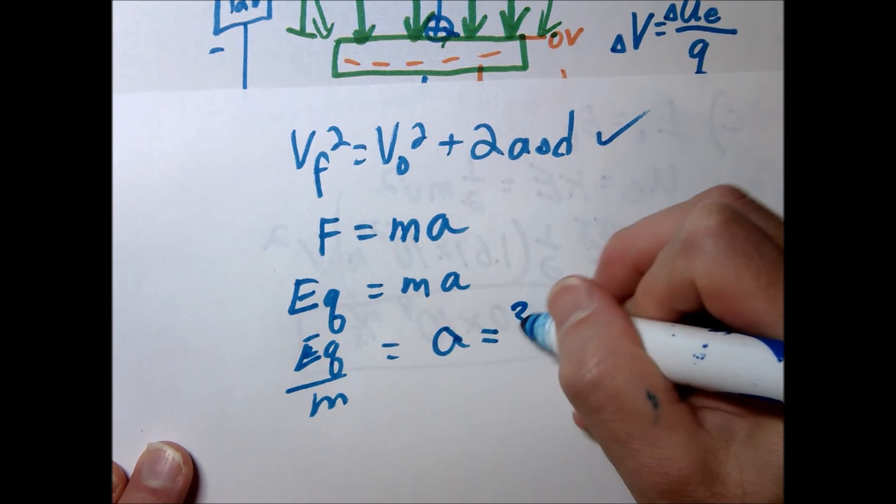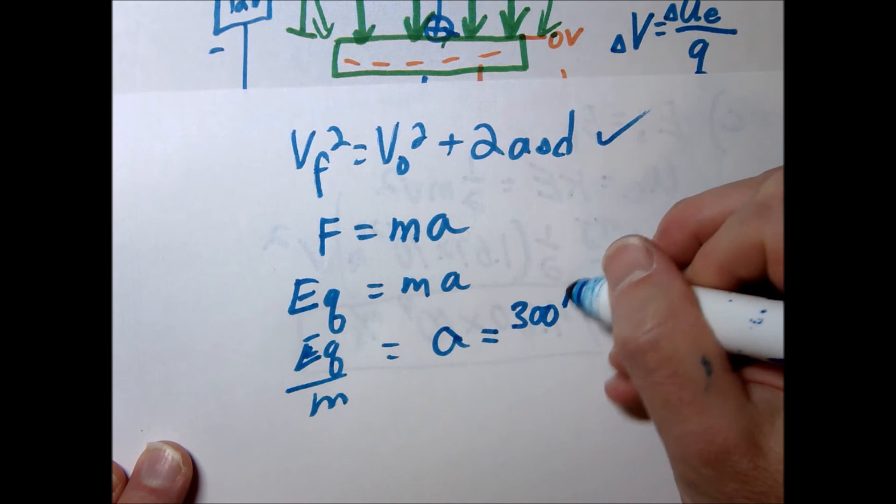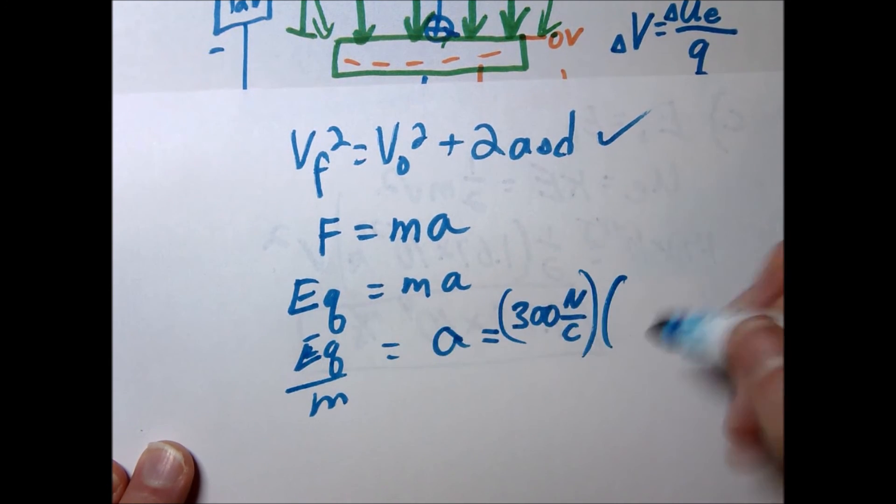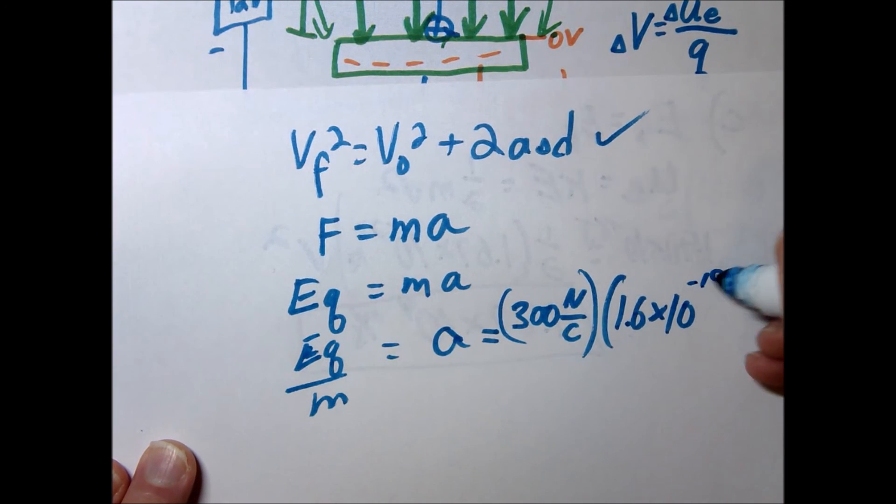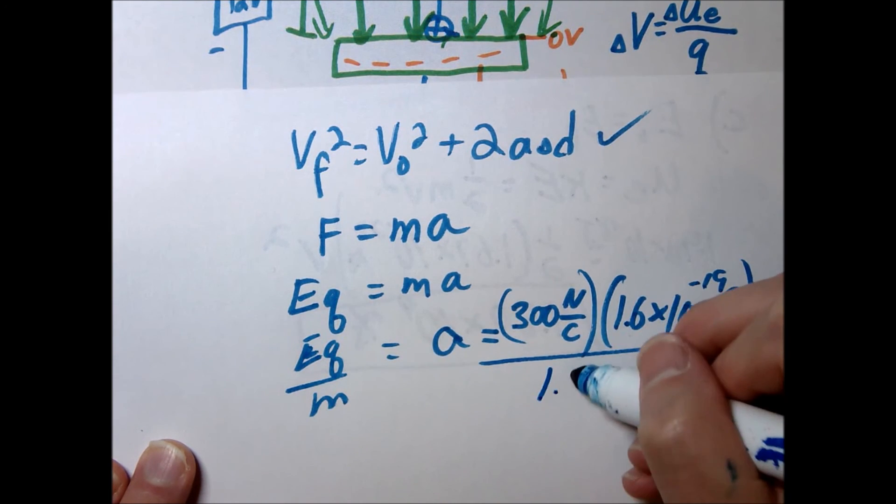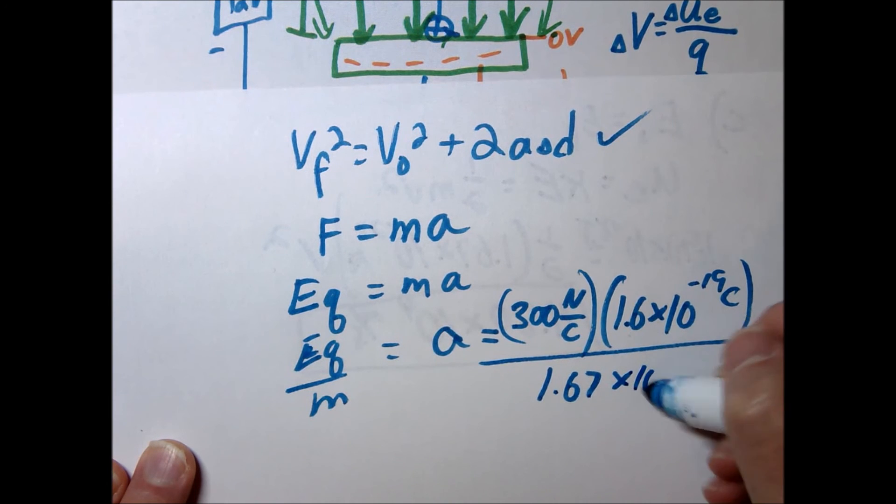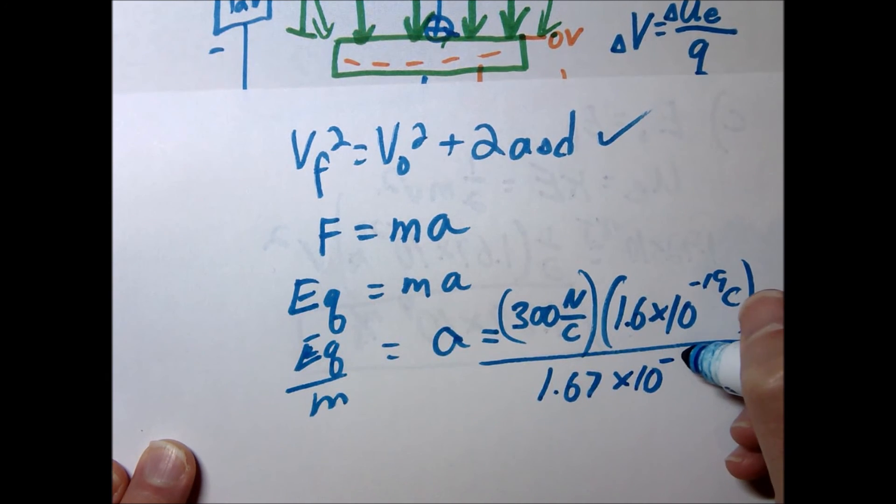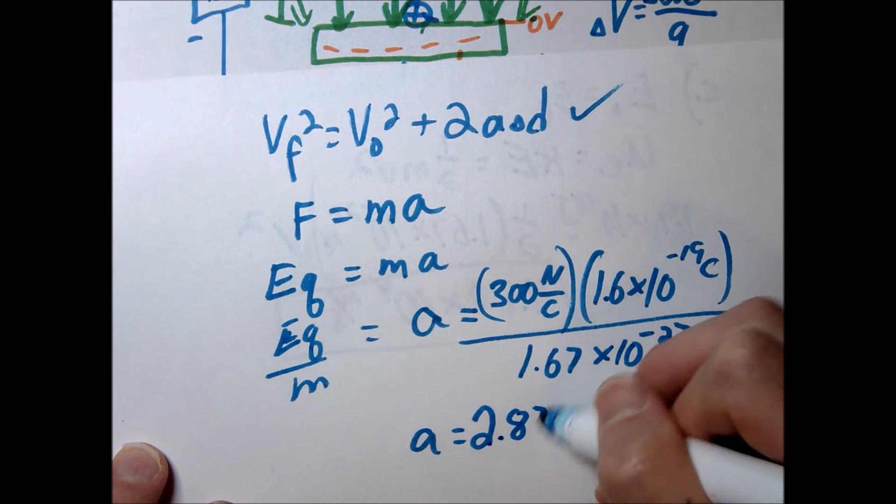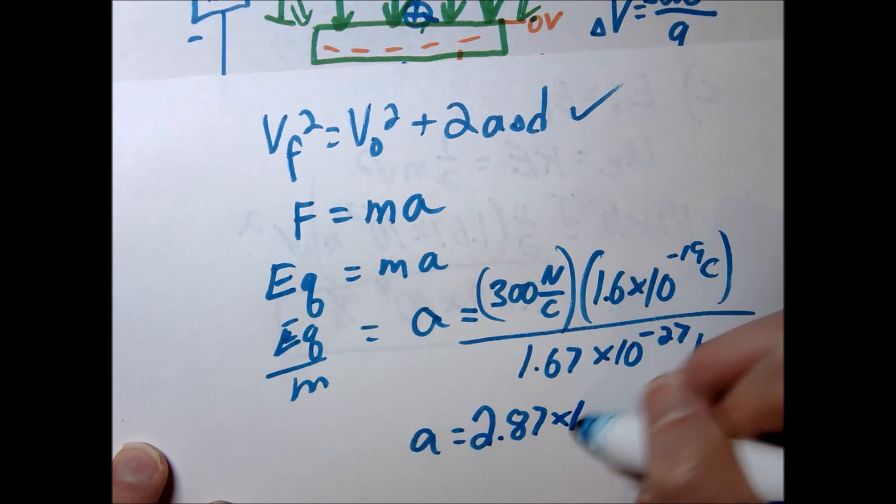In this case, our electric field we just calculated was 300, and again I'll use newtons per coulomb this time, just so you can see what happens. And then we're going to multiply by that charge, 1.6 times 10 to the negative 19 coulombs. And then we'll go ahead and divide it by the mass of a proton, 1.67 times 10 to the negative 27 kilograms. You're going to go ahead and do the acceleration. When I do it, verify that you get the same thing, 2.87 times 10 to the 10th.